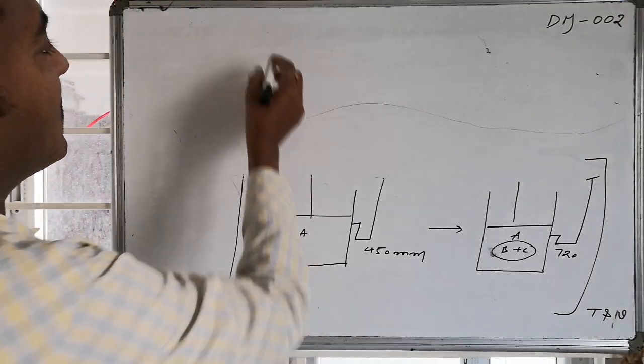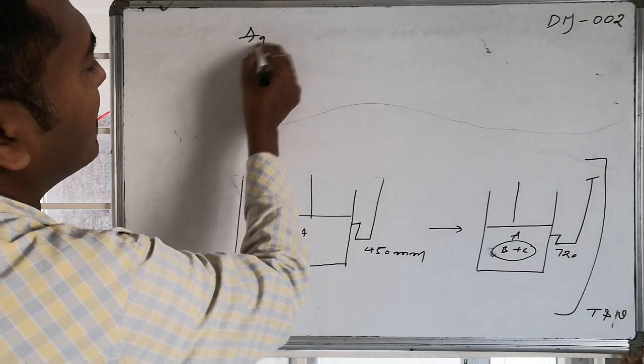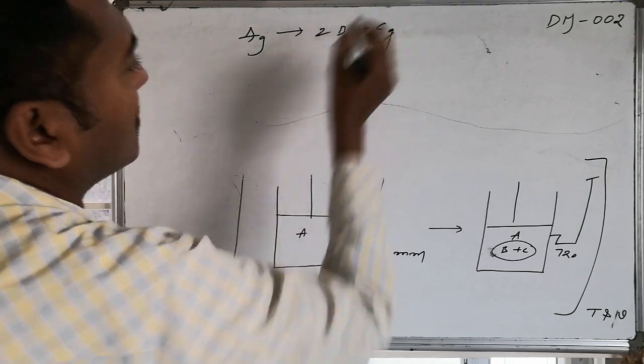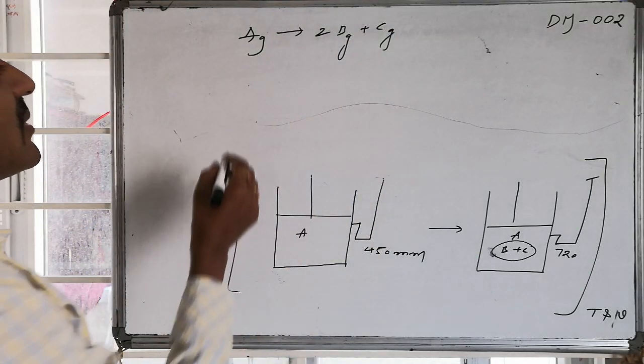As a solution part of this one, from the given equation, A gas undergoes decomposition and produces two B gas molecules followed by one C gas molecule.